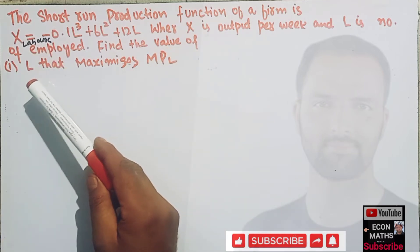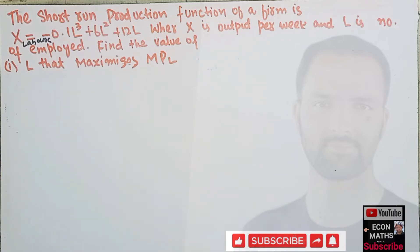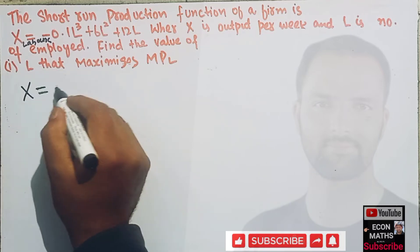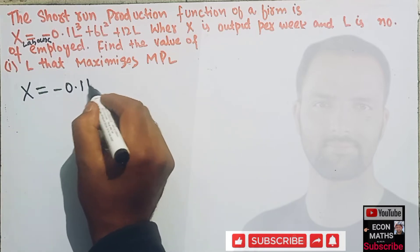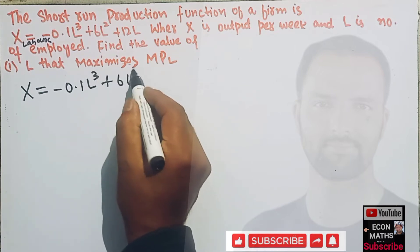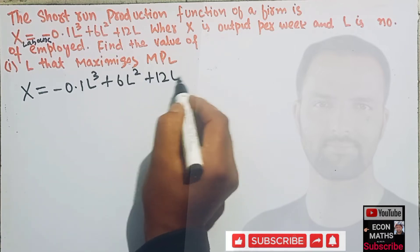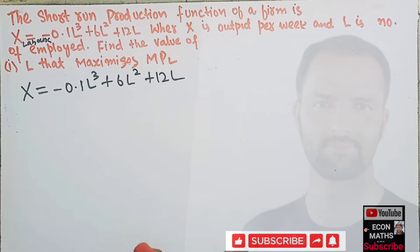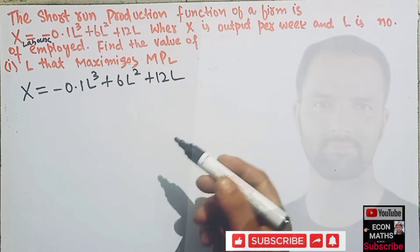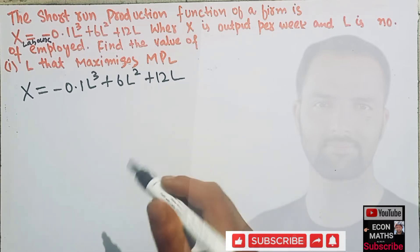We have to find the value of L, that is the number of labors, that maximizes our marginal product of labor. So first we write our production function: X equals minus 0.1L cubed plus 6L squared plus 2L. This is our production function.